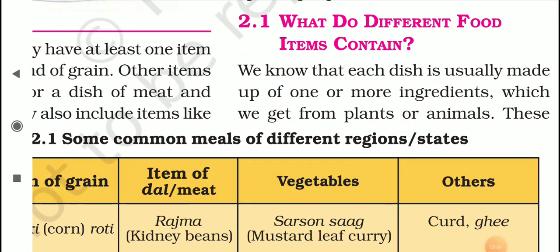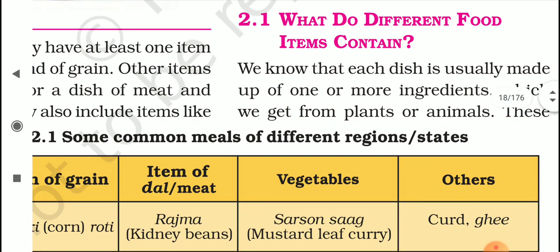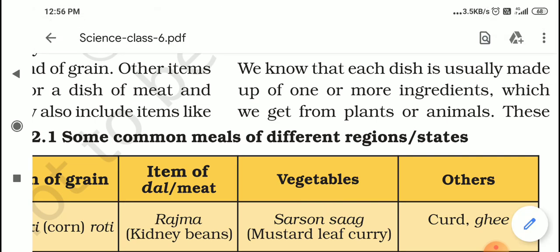Hello everyone! Today our topic is: what do different food items contain? We know that each dish is usually made up of one or more ingredients which we get from plants or animals. For example, while making kheer we need rice, milk, sugar, etc. The basic ingredients of kheer are rice and milk.